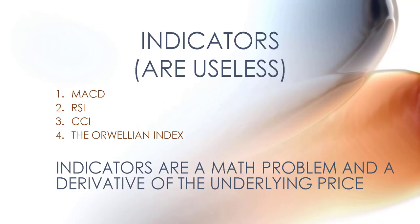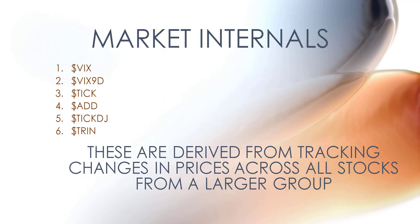Let's take a quick look at what indicators and market internals are and the differences between the two. Indicators are things like the MACD, the RSI, the CCI. Indicators are a math problem and they are nothing more than a derivative of the underlying price. I don't use them because what the underlying price is telling us is what the indicator is also telling us — if we see price going up, we know that price is going up. We don't need an indicator to tell us that. Market internals, however, are something different.